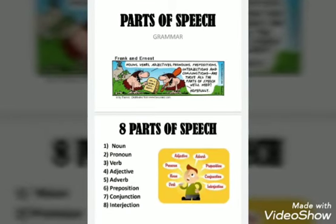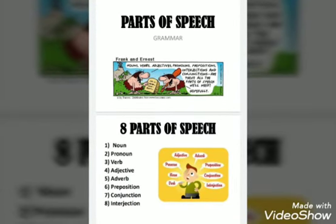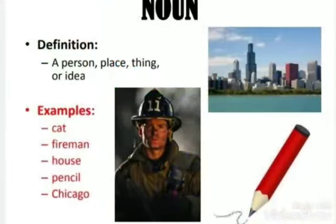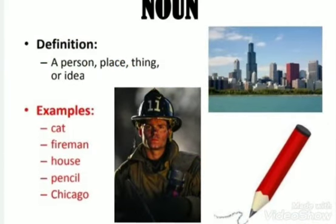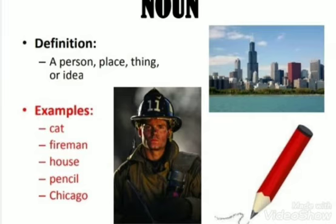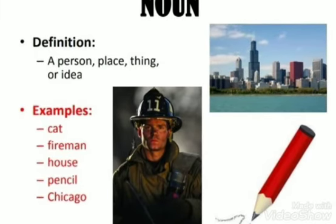So today we will learn about the parts of speech — its definition and examples. Noun is a name of any person, place, thing, or idea. For example: cat, fireman, house, pencil, Chicago.